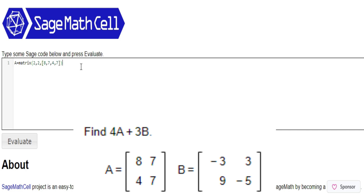Matrix B also has two rows and two columns — negative 3, 3, 9, negative 5. And the question wants us to find 4A plus 3B.